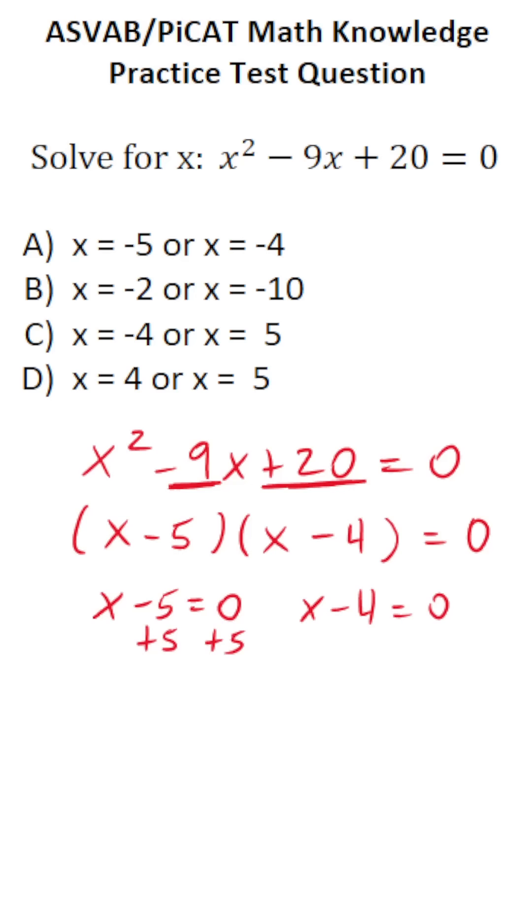To solve this one, you just add 5 to both sides. This says x equals 5. To solve this one, you simply add 4 to both sides. This says x equals 4. So our solution is x equals 4 or x equals 5, which is clearly answer choice D.